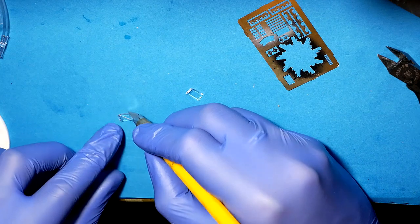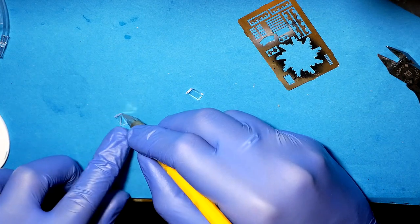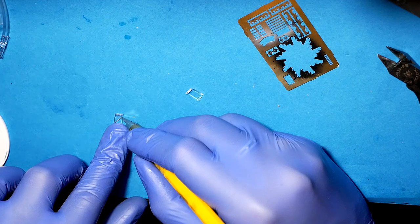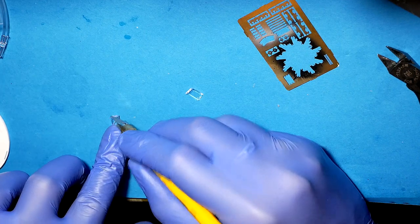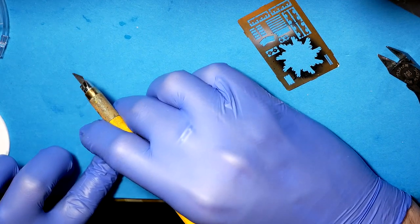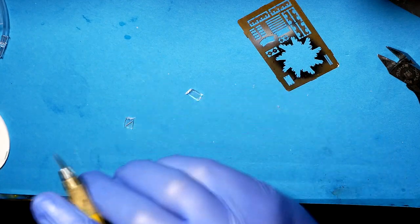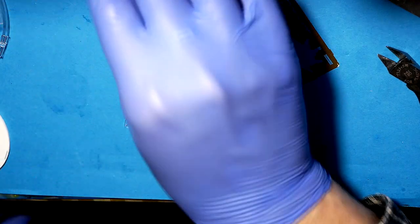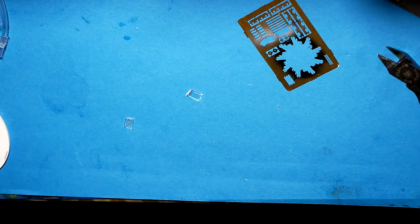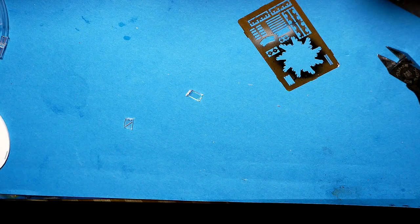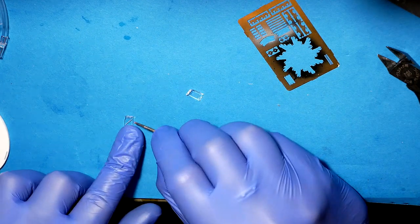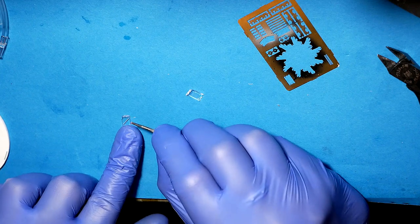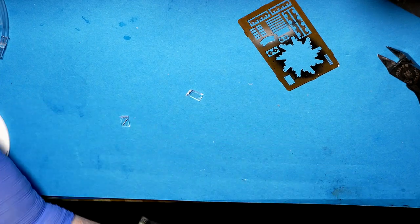I use gel type CA glue to be sure that everything will be exactly that place when I want and also it was very helpful to use that metal primer. It works really nice and there were no troubles with paint on the PE parts.